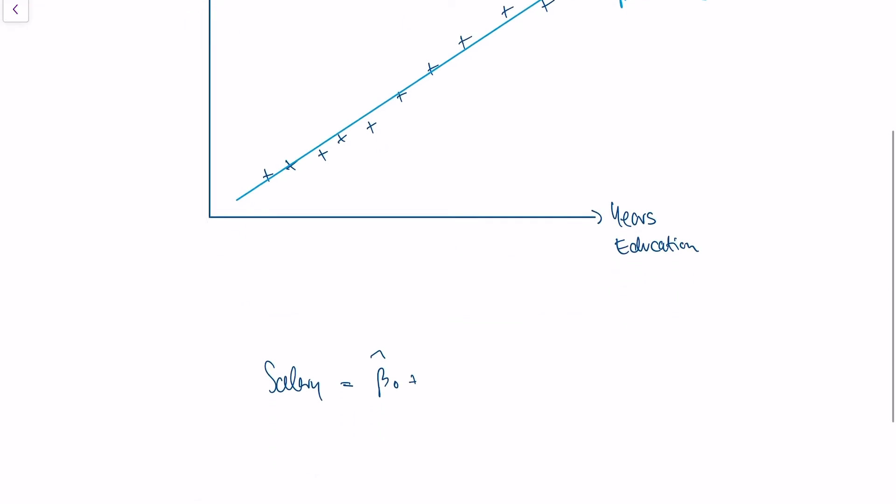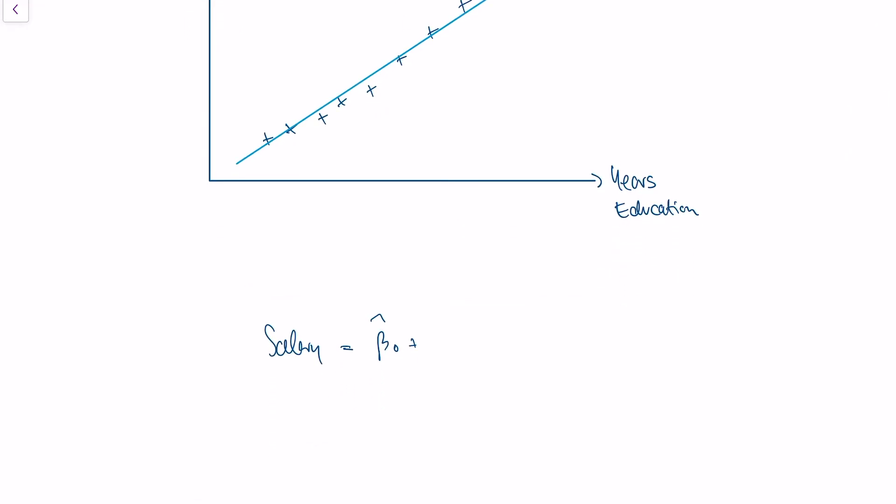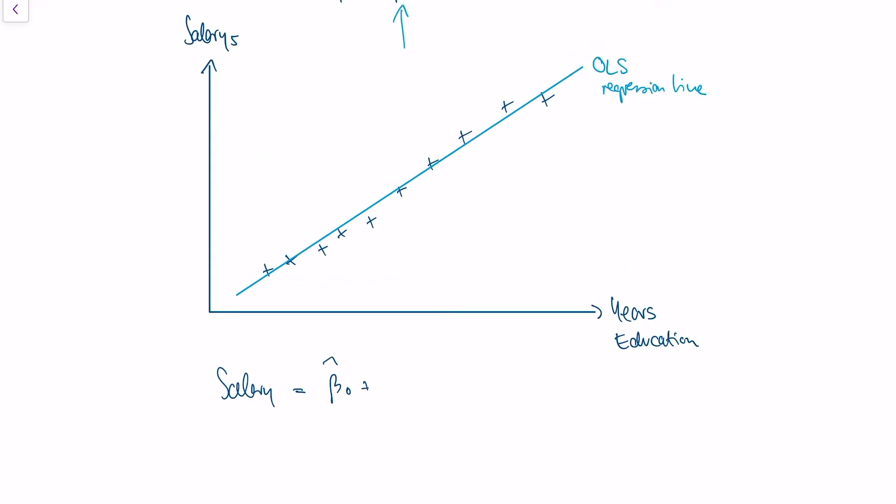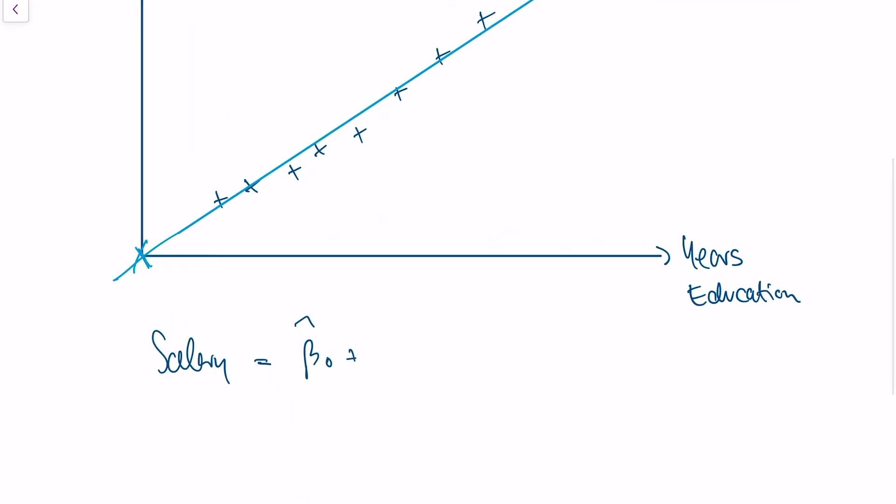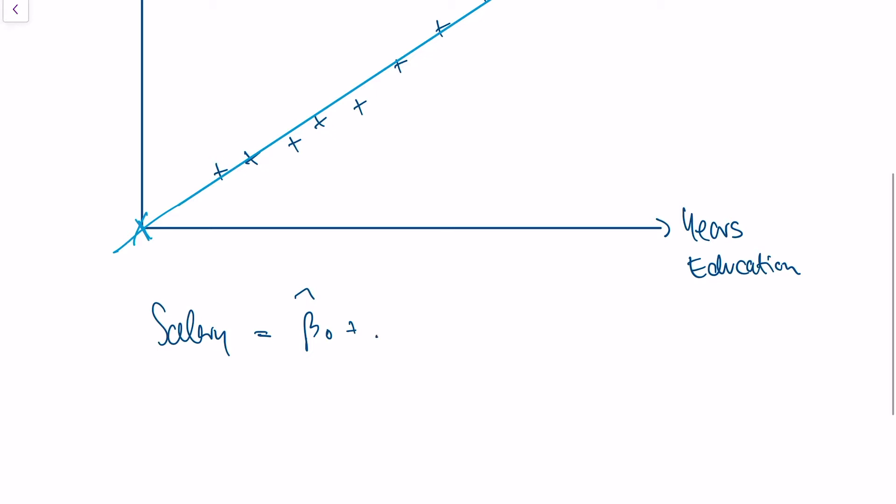In other words, what we would get is this equation and numbers from our estimation method ordinary least squares. We would get some intercept of the line, the intercept would be the point where the line crosses the y-axis. This is zero in this case, and we would get an estimate for beta 1, maybe 1,000 times years of education.